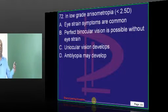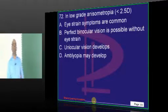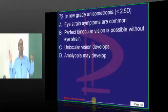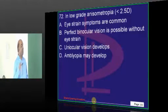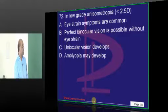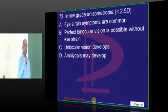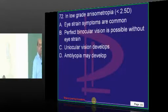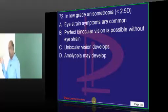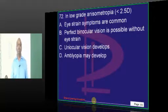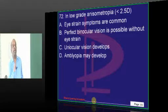Now if there is low grade anisometropia versus high grade anisometropia, what is the difference between the two? Even if the anisometropia is low grade, will amblyopia still develop? If the anisometropia is low grade, will the person lose binocular vision and become uniocular?